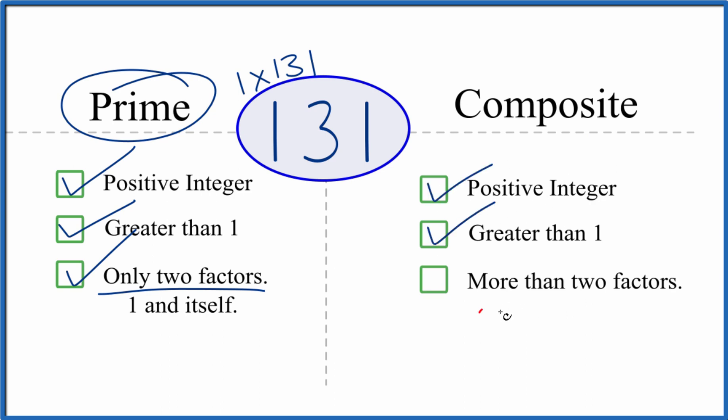It's greater than one, but are there more than two factors? We just said there are only two factors, so there's not more than two factors. 131 is not a composite number. This is Dr. B, thanks for watching.